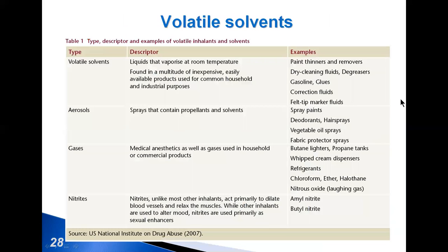Volatile solvents, such as those found in fuel, paints, and thinners, are found throughout the world and are used in a variety of industrial applications. Research on the abuse potential and addictive properties of volatile solvents has lagged behind that of other illicit drugs of abuse.